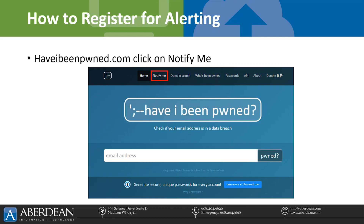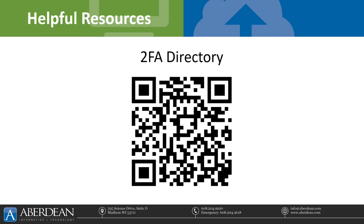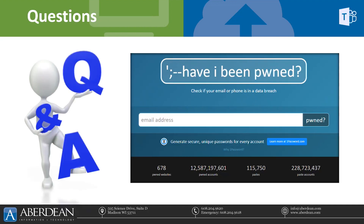We do have some other helpful resources. Here is one of the articles about this breach from Malwarebytes — 'The Mother of All Breaches: 26 billion records found online.' TJ is going to be posting those links into the chat, or you can scan the QR code with your phone. The next resource is 2FA Directory, which is a directory of all sorts of different web services and applications that have MFA enabled. You can see what MFA processes they have — whether it's text, email, or if you're able to use an application like Microsoft Authenticator. Let's open up the floor for questions.